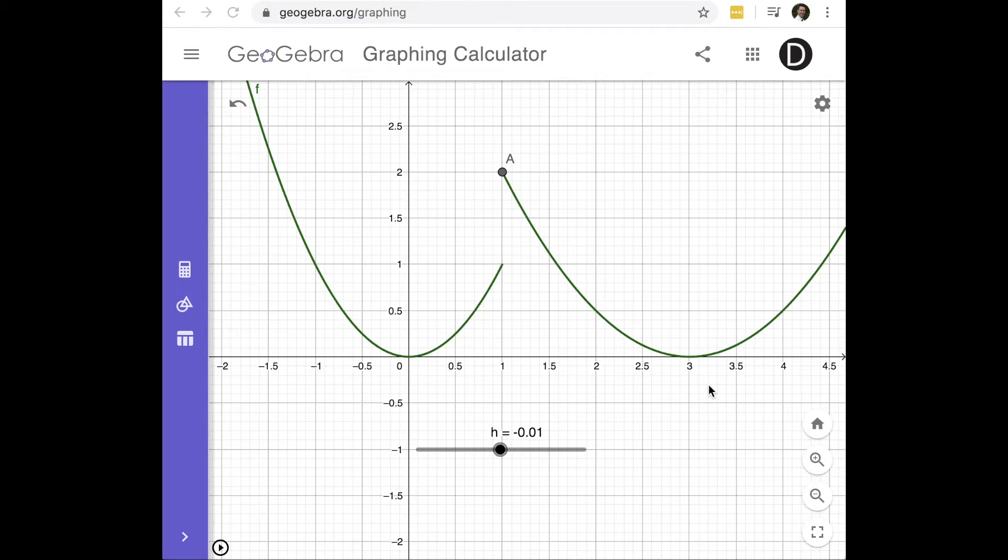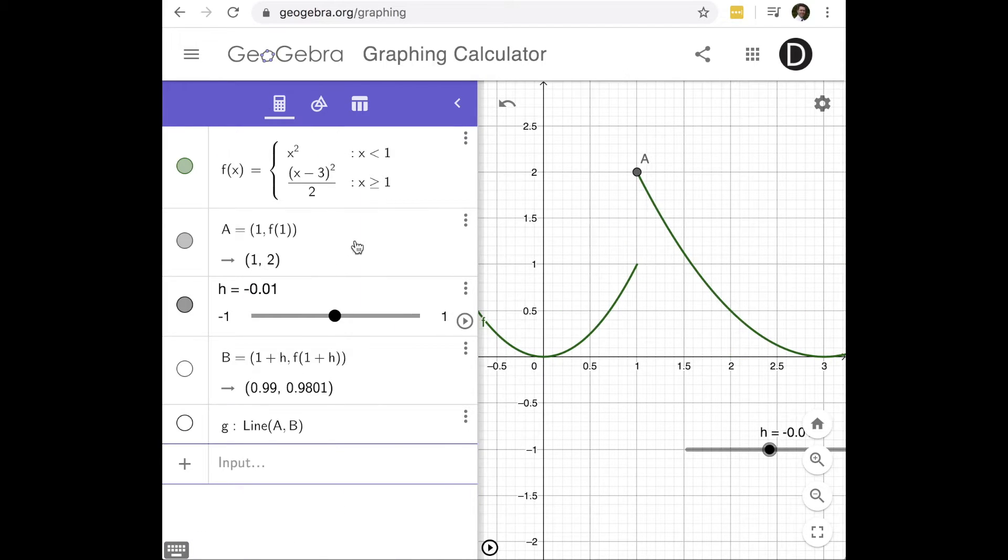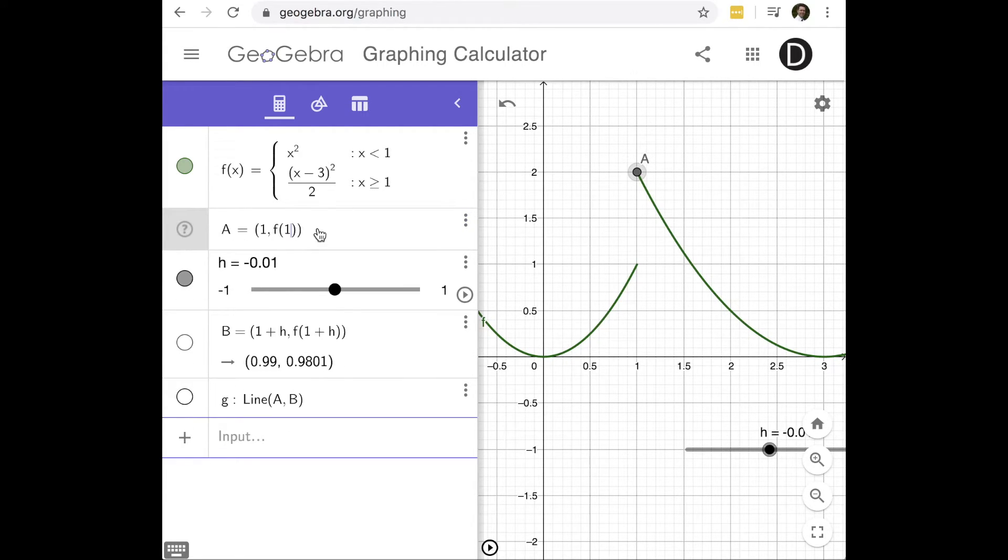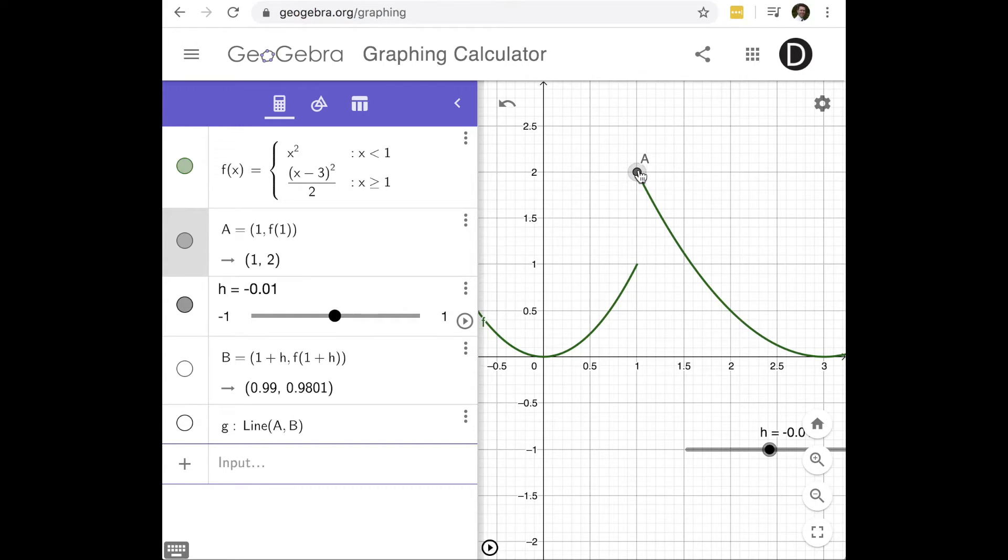All right, now I've made a slight modification. I've changed my function so that it's not continuous here at x equals 1. So let me show you the new definition. My new definition of my function is still x squared on the left, but I've changed how I divide it on the right. So it's now divided by 2. I get a different value. Notice that at x equals 1 my value is the value 2.